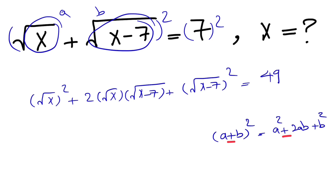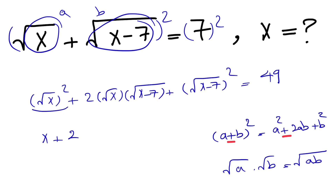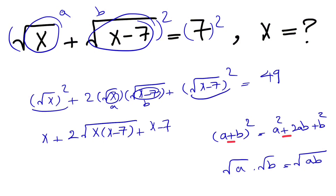Now it's getting easier. We can get rid of this square root. So we have x plus 2 times — and we know when we have the square root of a times square root of b, this will be equal to square root of ab. So we have 2 times the square root of x times (x minus 7), plus x minus 7, is equal to 49.